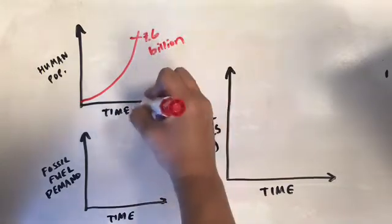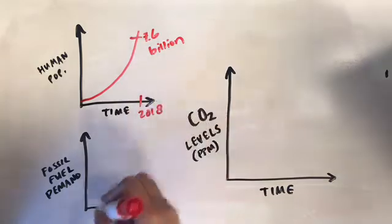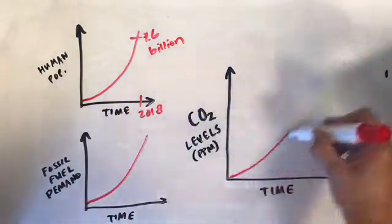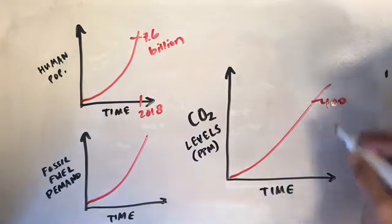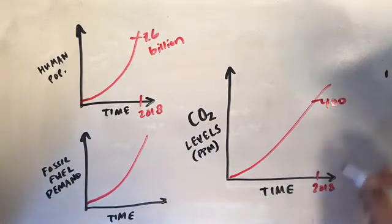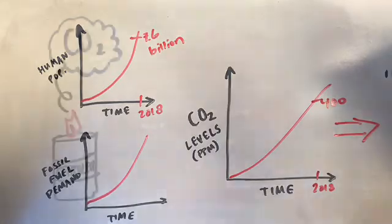The Earth's population is still growing exponentially with about 7.6 billion people today. We also have an increased demand for fossil fuels because of all these people. And because of that, we have an increased amount of CO2 in our atmosphere, about 400 parts per million. This all leads to one thing.